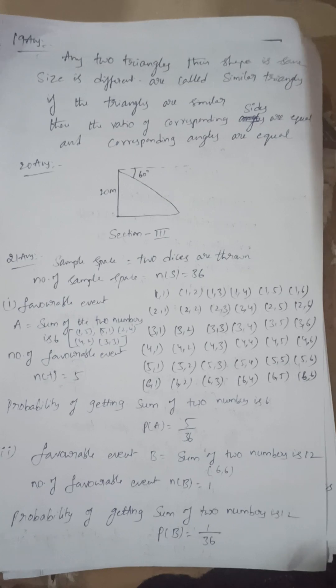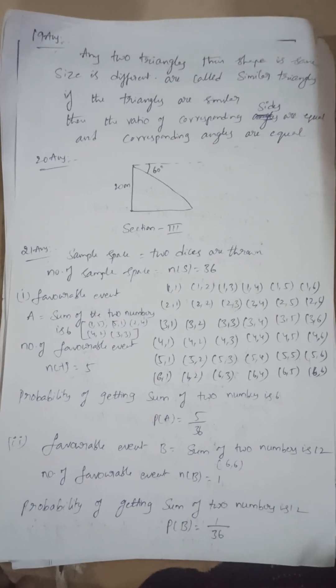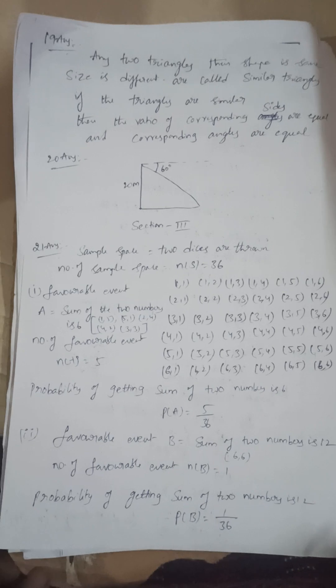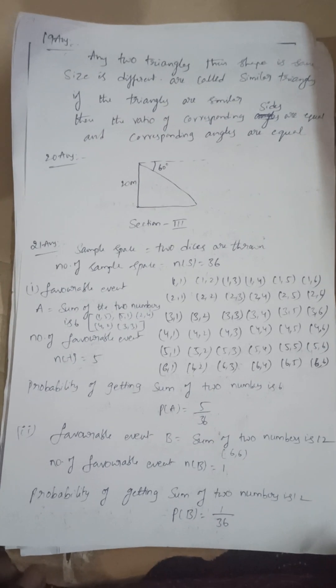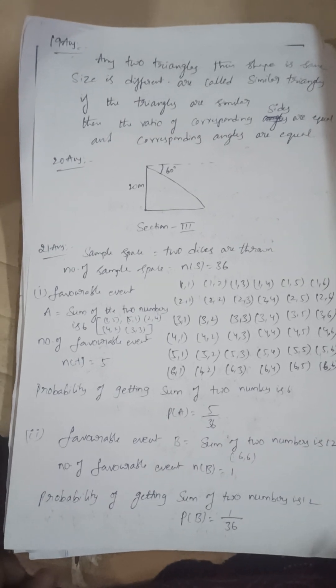Next, 20th question: a person observes the height of the building. Height of the building is 20 meters. On the ground level, the angle of depression is 60 degrees. That is the diagram.